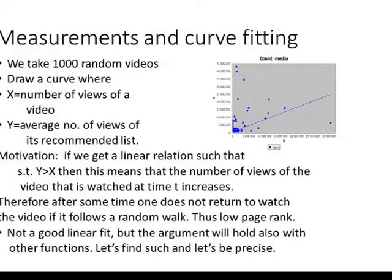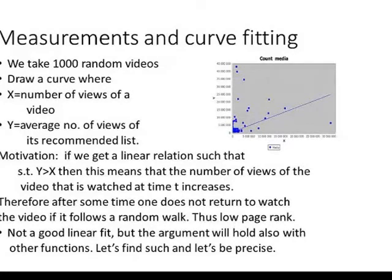Let me present the motivation for what we are doing here. If the linear relation implies that Y is greater than X, then the number of views of the video being watched increases over time, and after some time one will not return to watch a video following a random walk over the recommendation graph. As a result, we will get a low page rank. It turns out that the linear fit is not a good one, but the intuitive argument also holds with other functions that give a better fit.